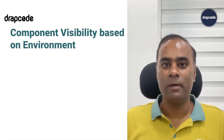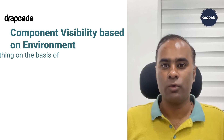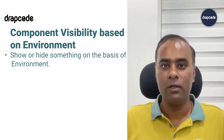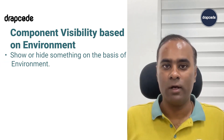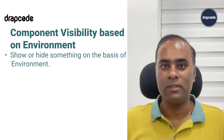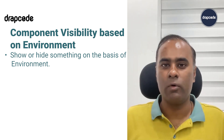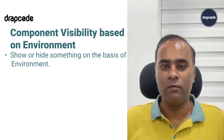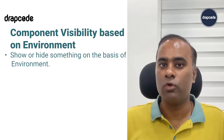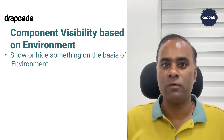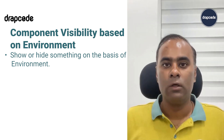Hi guys, this is Vishal here from DraftCode. In this video we will understand how to show or hide something based on the environment. By default in DraftCode, each project has two environments: staging (preview) and production for live users. We also support two more environments — sandbox and pre-prod — which we call alpha and beta.